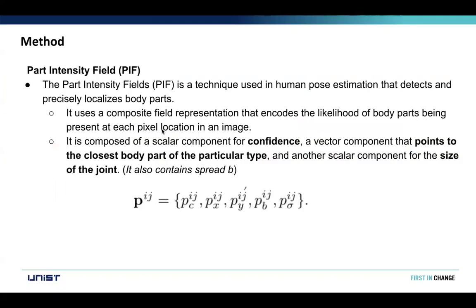Part Intensity Field (PIF), which is used in this network, is a technique used in human pose estimation that precisely localizes body parts. It uses a composite field representation that encodes the likelihood of body parts being present at each pixel location in an image. It is composed of a scalar confidence component, a vector component that points to the closest body part of that particular type, and another scalar component for the size of the joint.